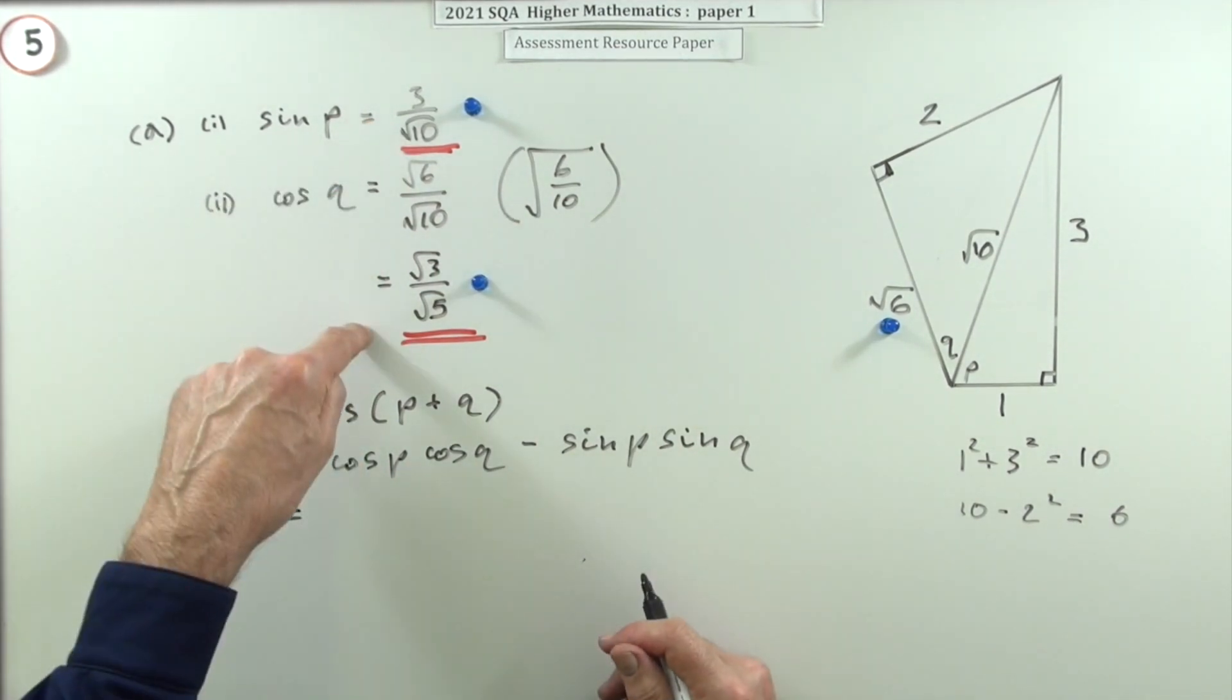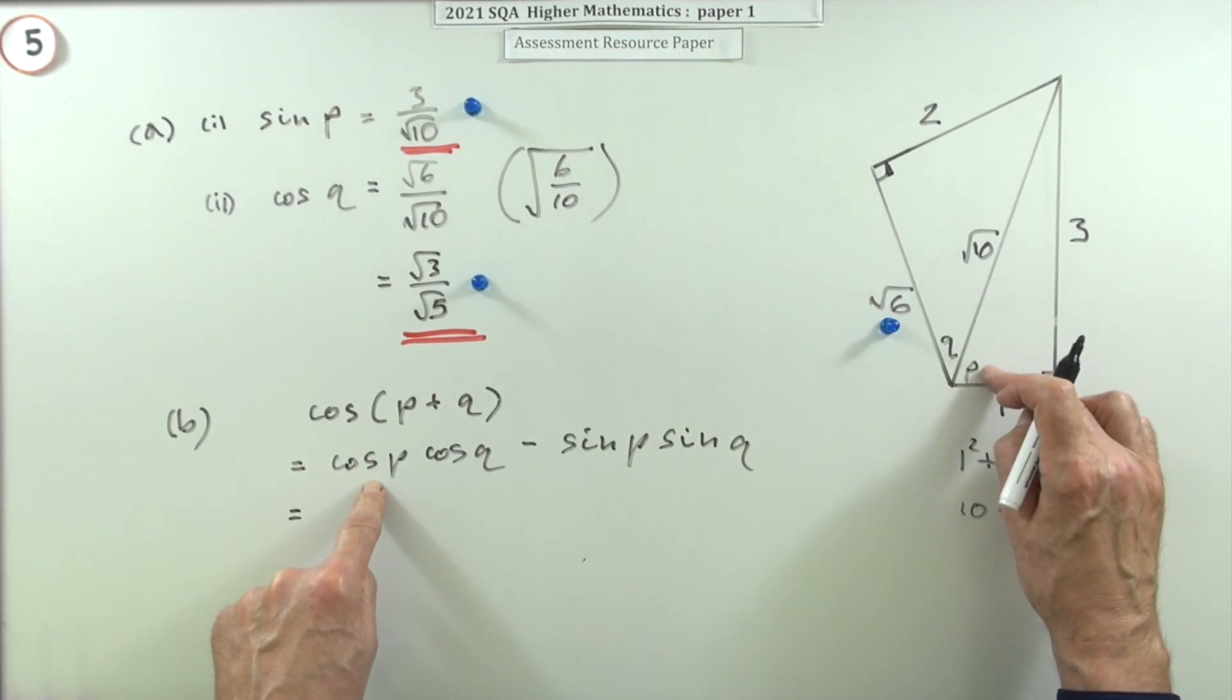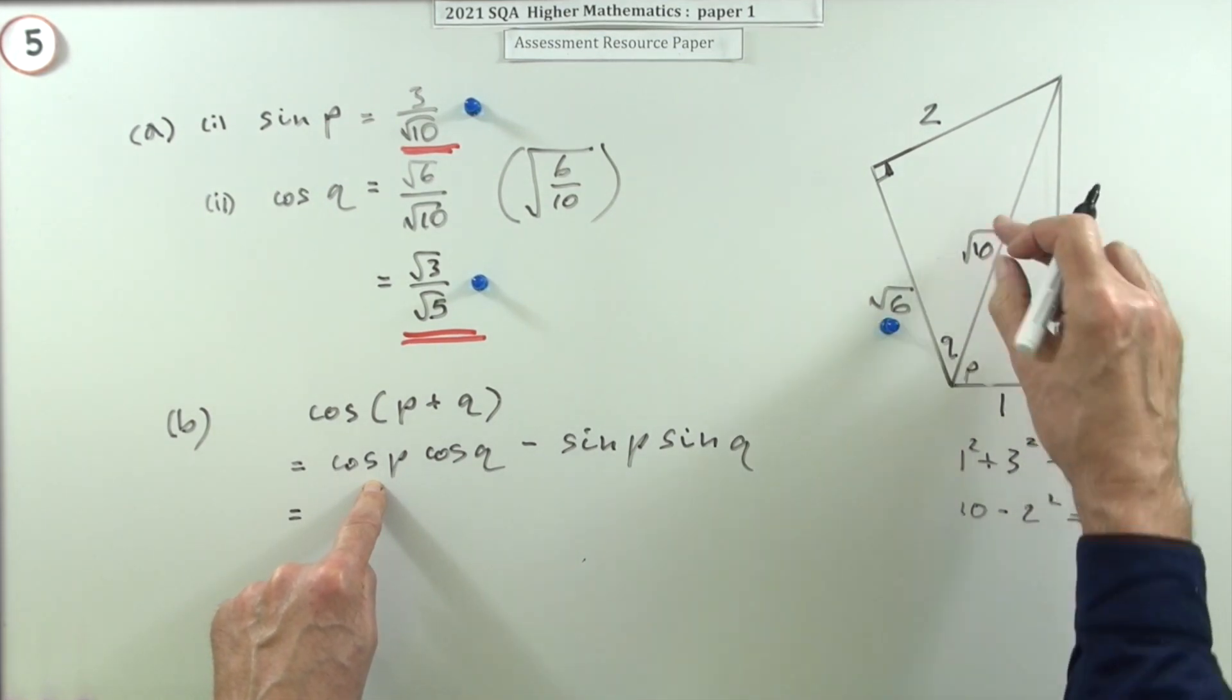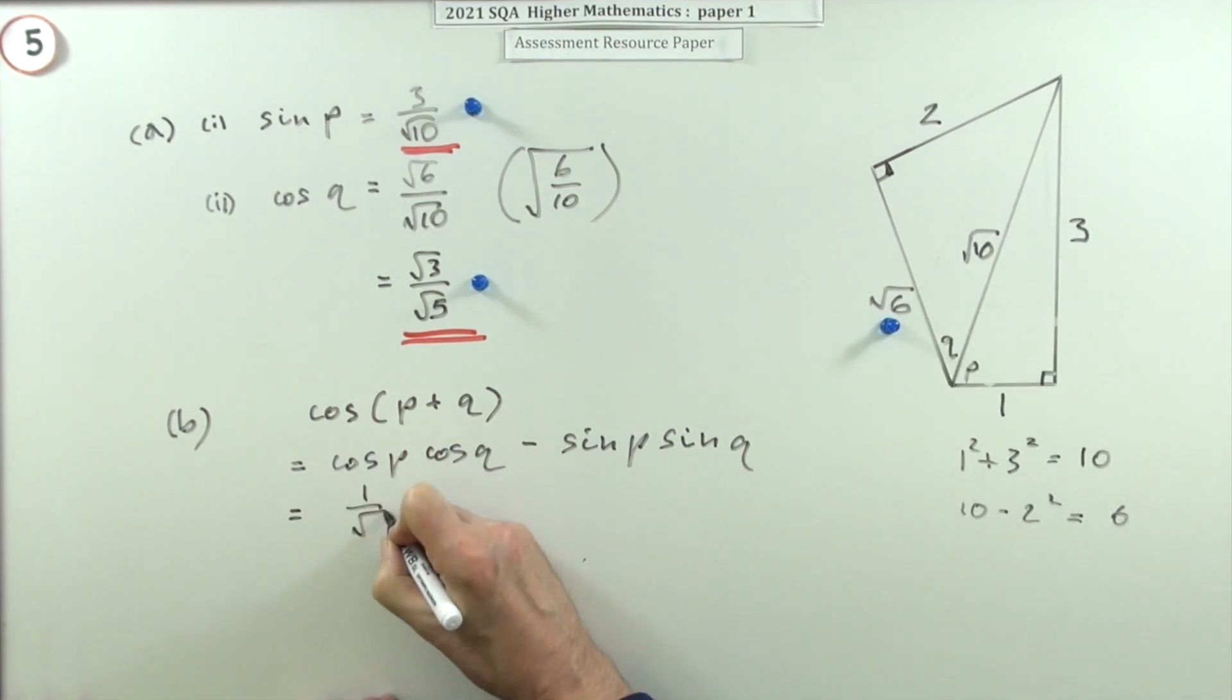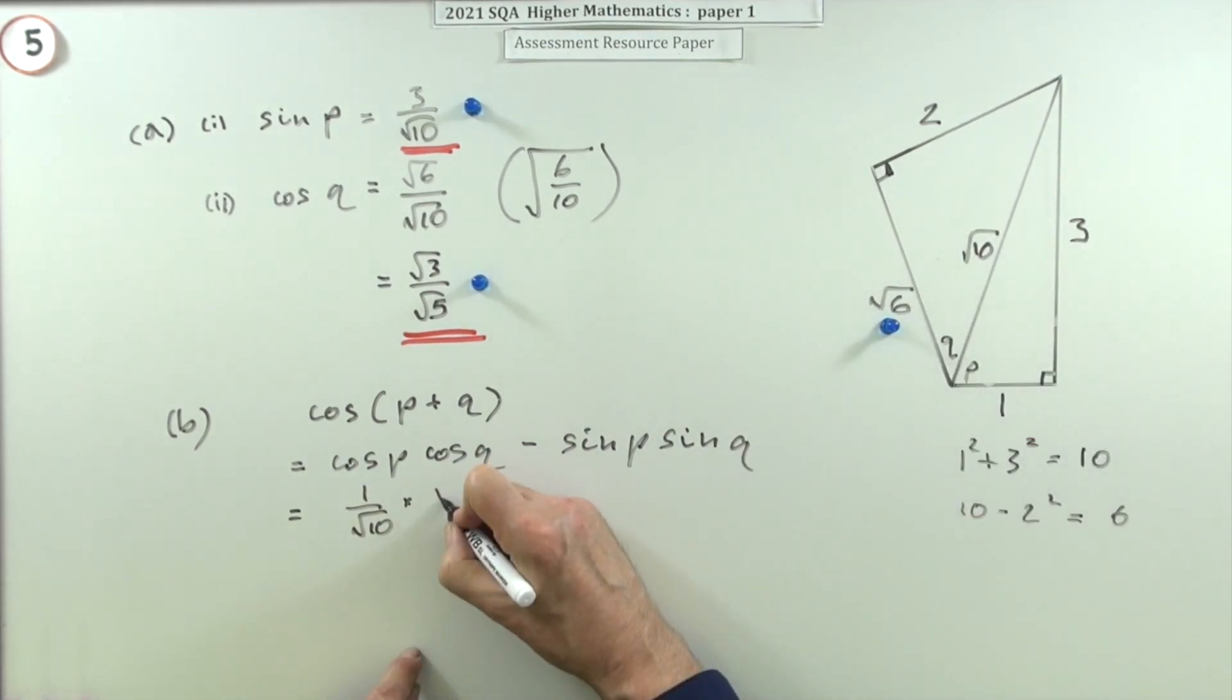And then just pop them all in. Cos of P - that's this one here, cosine means adjacent - that's 1/√10. Cos of Q, that's √6/√10, and that's what I'm going to use.